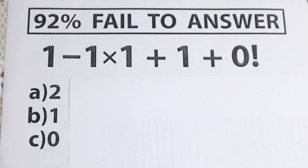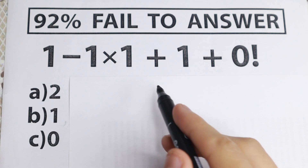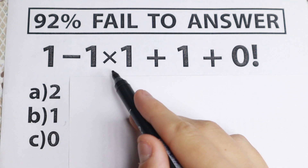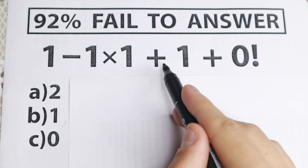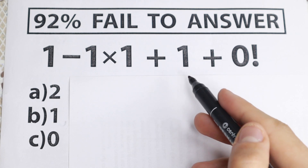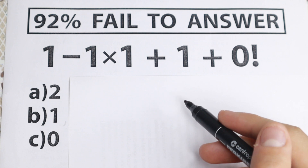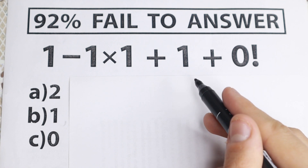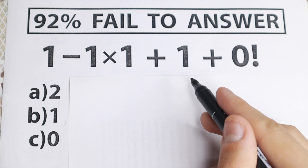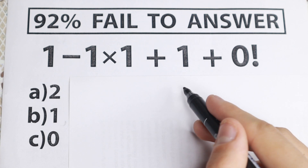Hello my friend, happy to see you here. Today we have a really interesting, tricky problem. A lot of students fail to solve it: we have 1 minus 1 times 1, plus 1, and plus 0 factorial. What are the common mistakes right here?